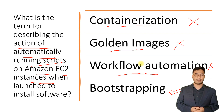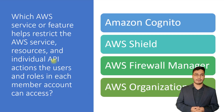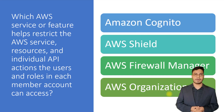So we will go with Bootstrapping for that question. The next question asks: which AWS service or feature helps restrict AWS service resources and individual API access that users and roles in each member account can access? The options are: Amazon Cognito, AWS Shield, AWS Firewall Manager, and AWS Organizations.